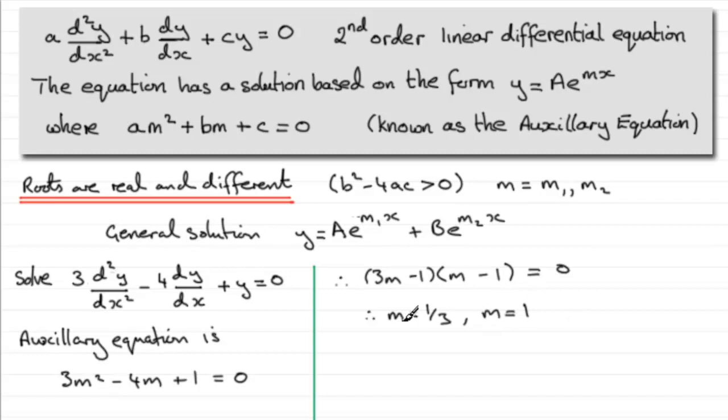So that means that our general solution, okay we'll just write that in, the general solution for this equation is going to be y equals a constant A times e to the power m1x. Well, if we take m1 as being that root there, 1/3 x, and then it'll be plus another constant B multiplied by e to the power m2x, where m2 is now this root 1. So we've got e to the power 1x, well just leave that as x.